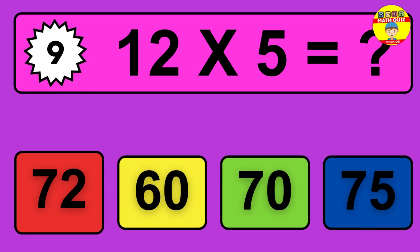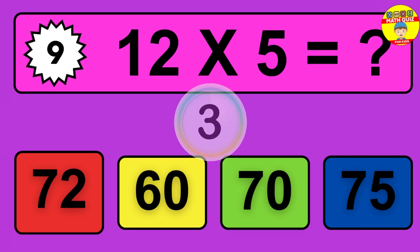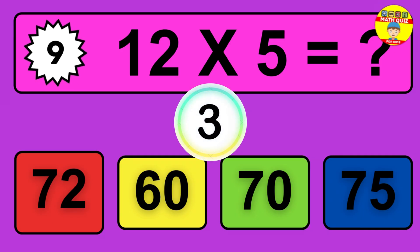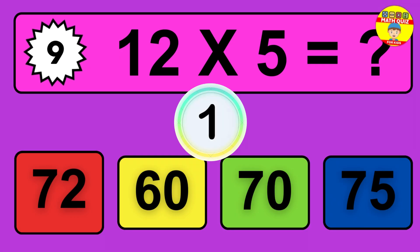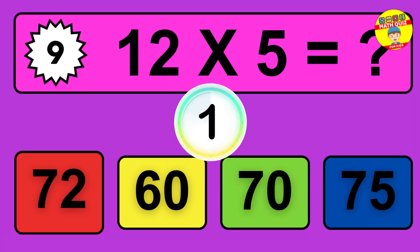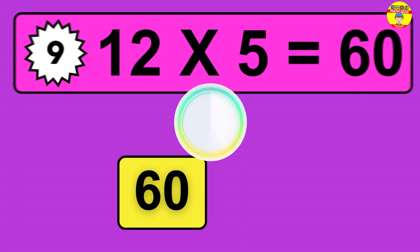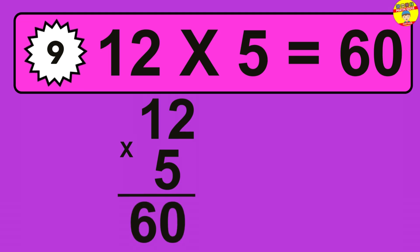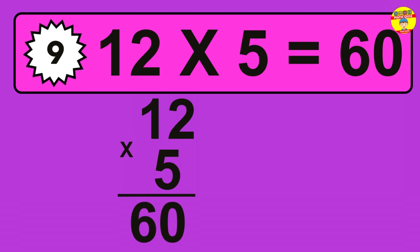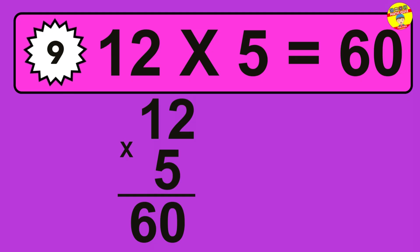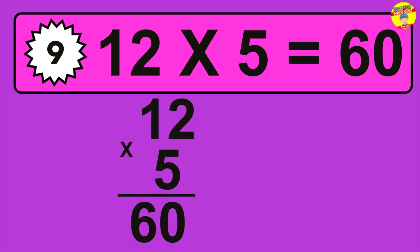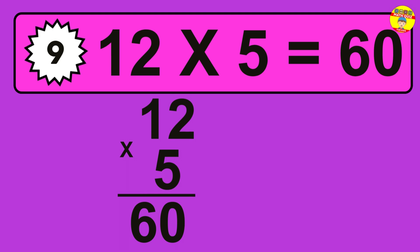Question 9. 12 times 5 equals what? The answer is 12 times 5 is 60. To calculate, we have 12 groups with 5 balls each one. So, how many balls do we have? 60 balls.